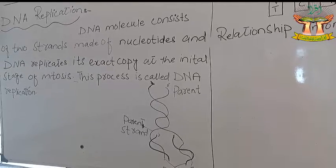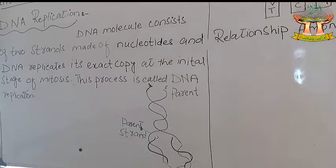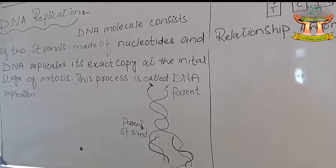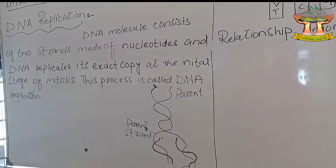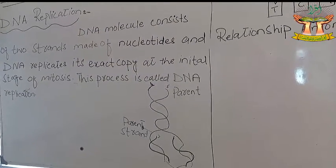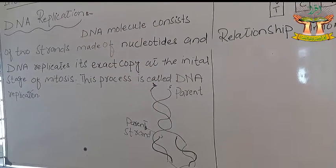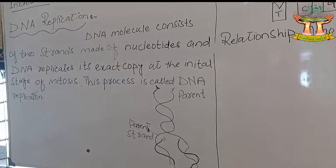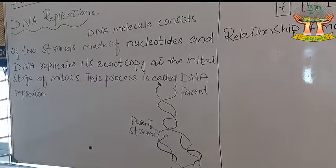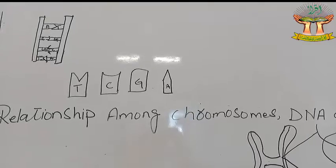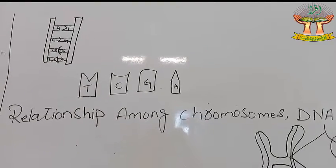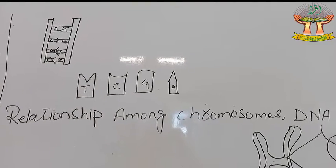So from one parent DNA, we get two daughter DNA molecules. The parent strand unwinds, and a new daughter strand is formed alongside each original strand, giving us a new DNA strand.